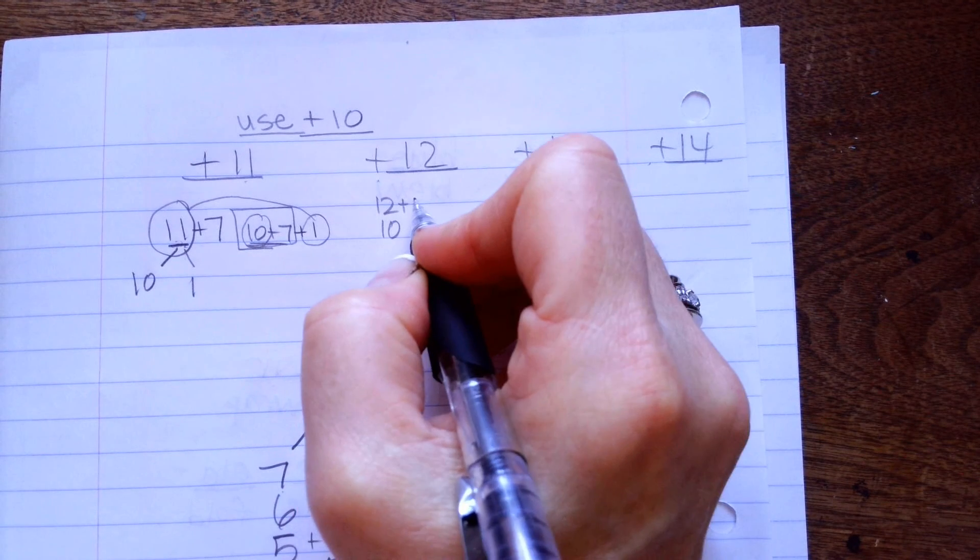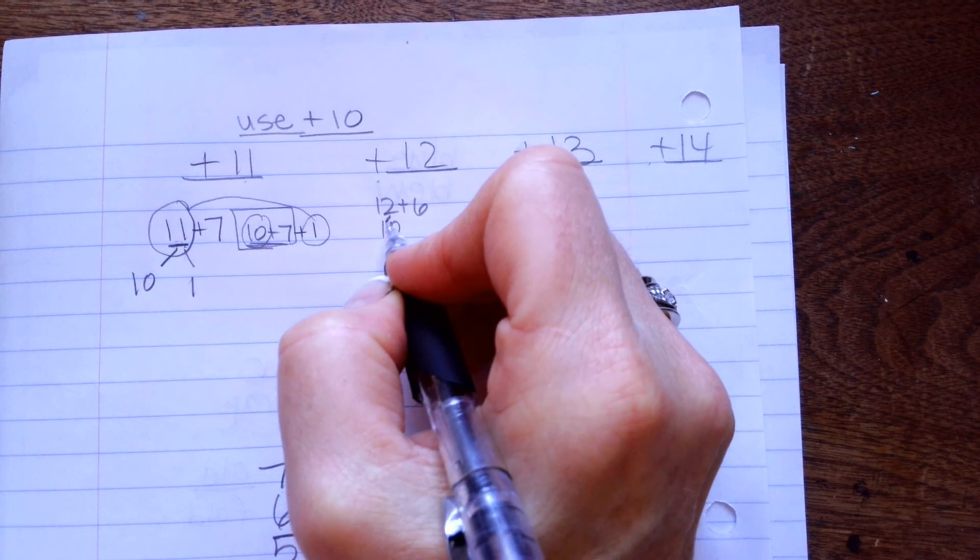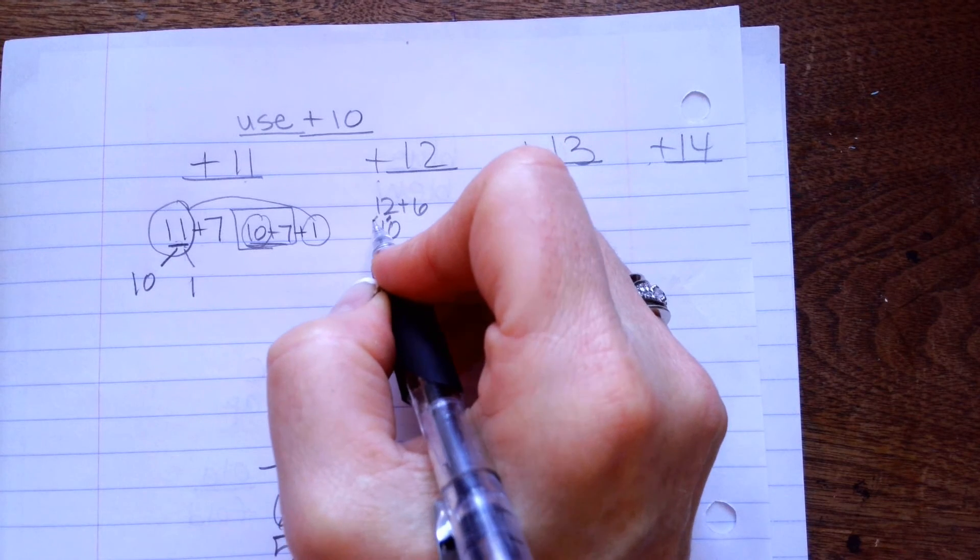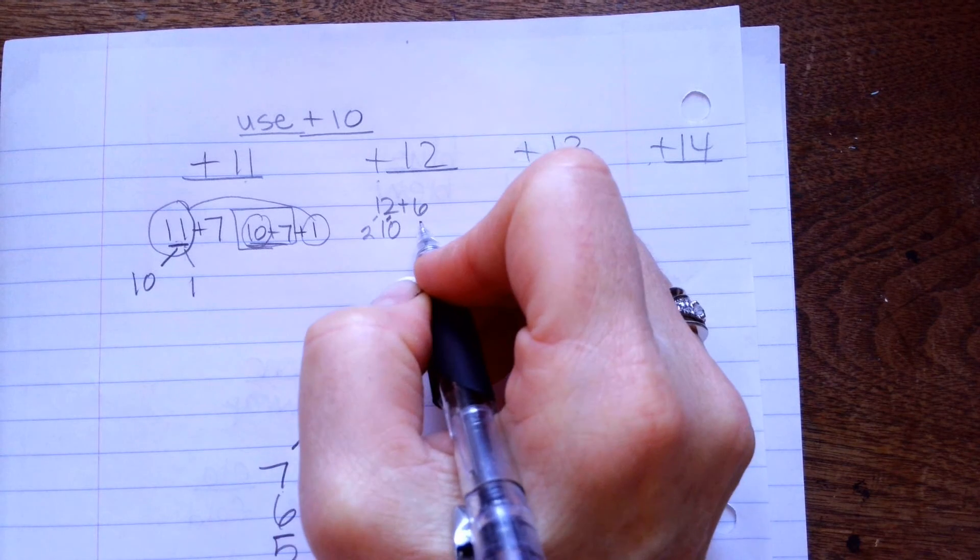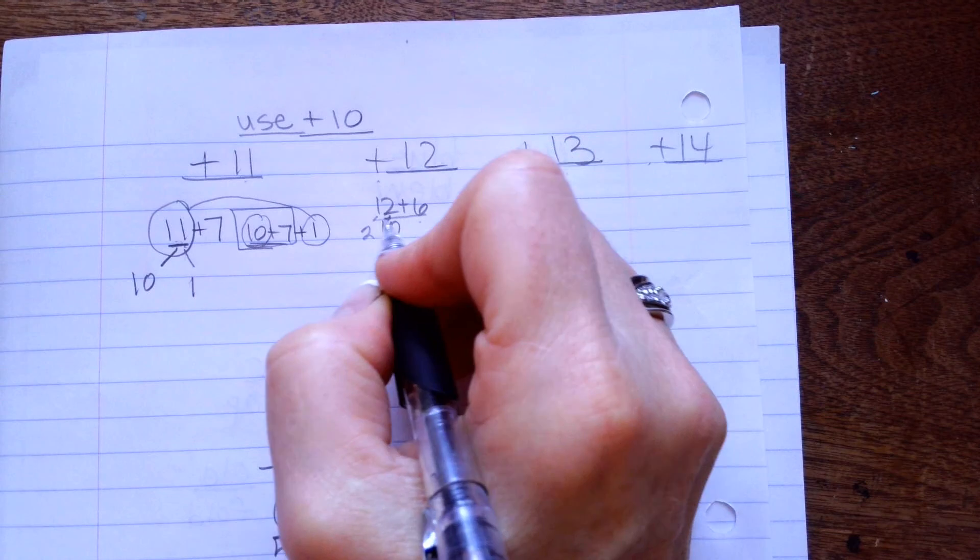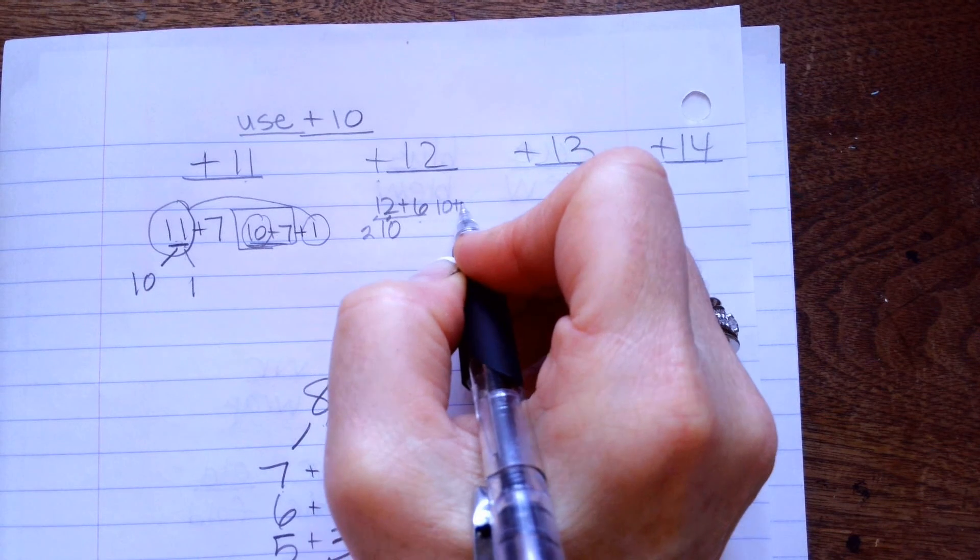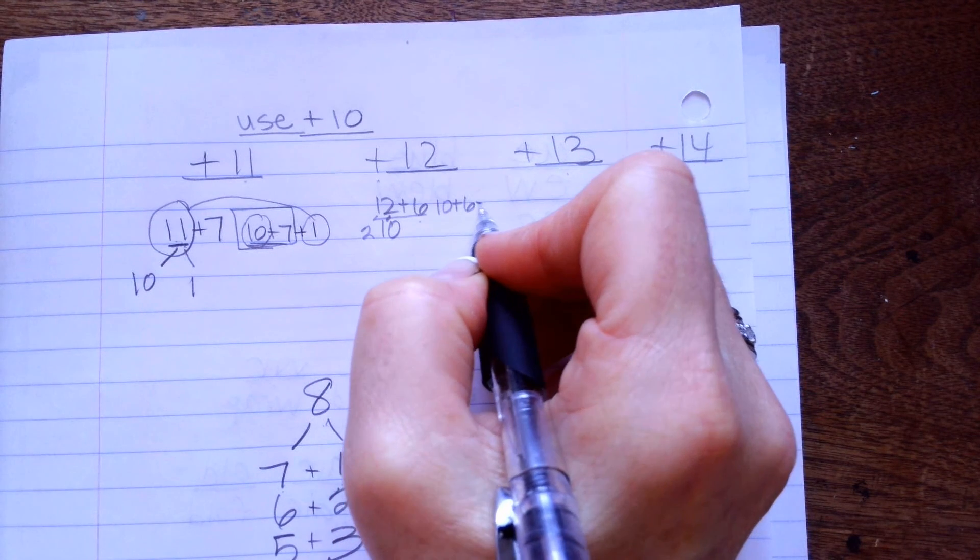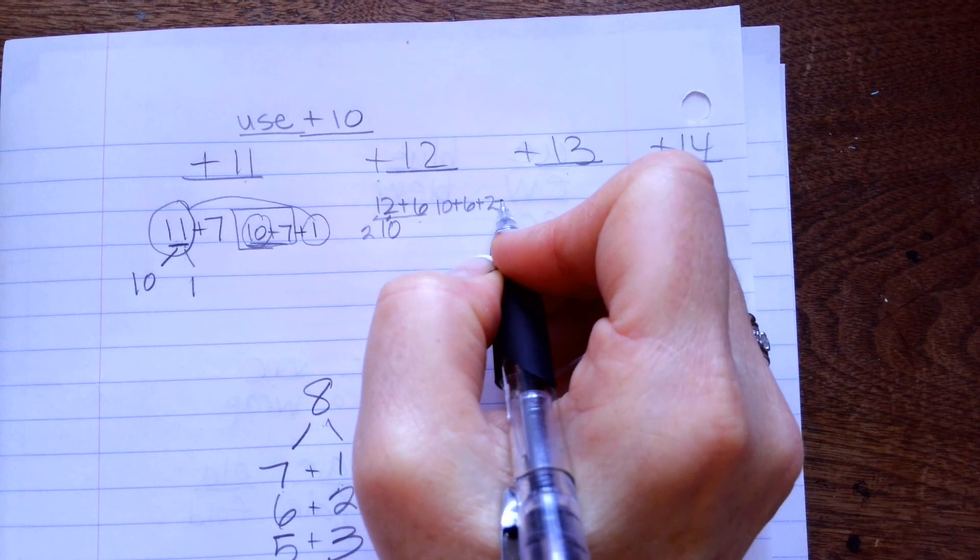12 plus 6. I'm going to split this into a 10 and a 2. And, so, I'm going to say, if I have 12 plus 6, I'm going to use 10 plus 6 equals 16 plus 2 equals 18.